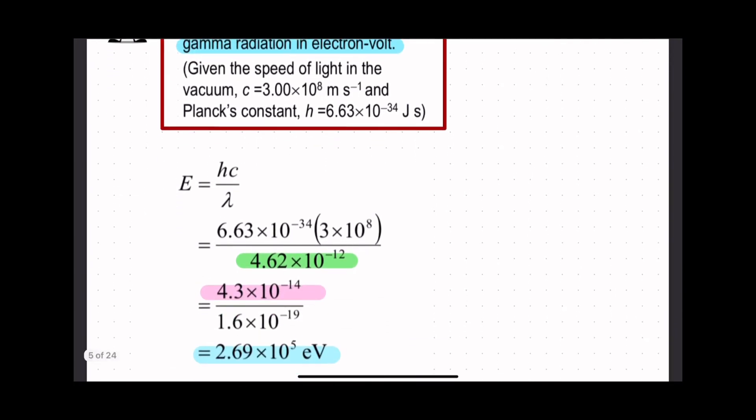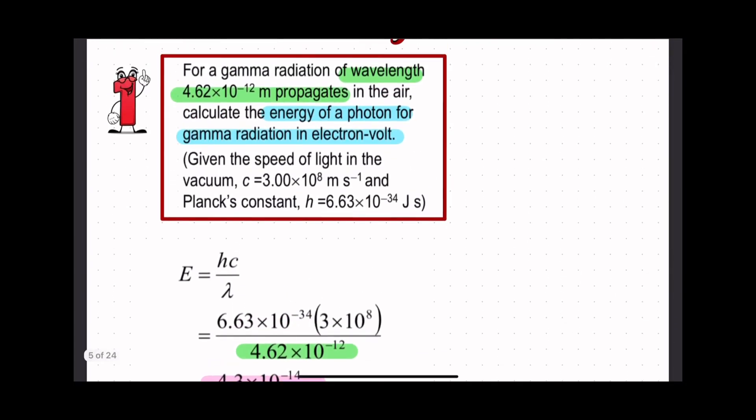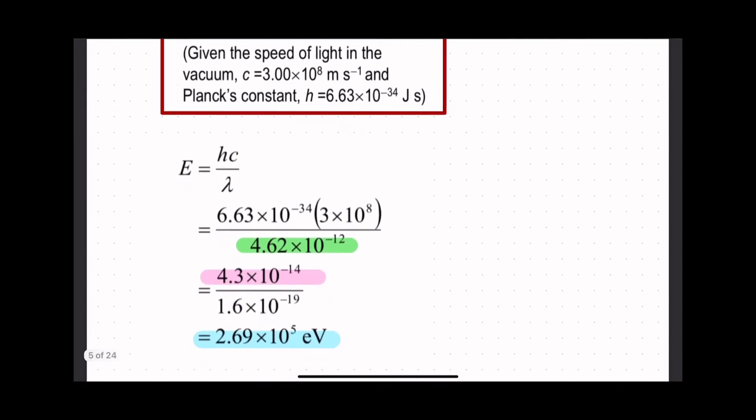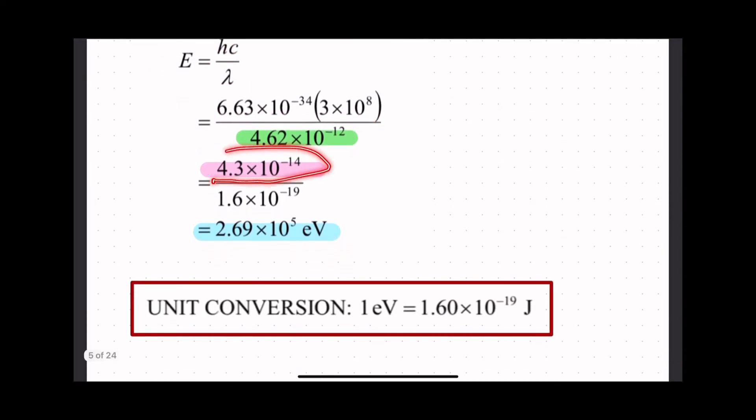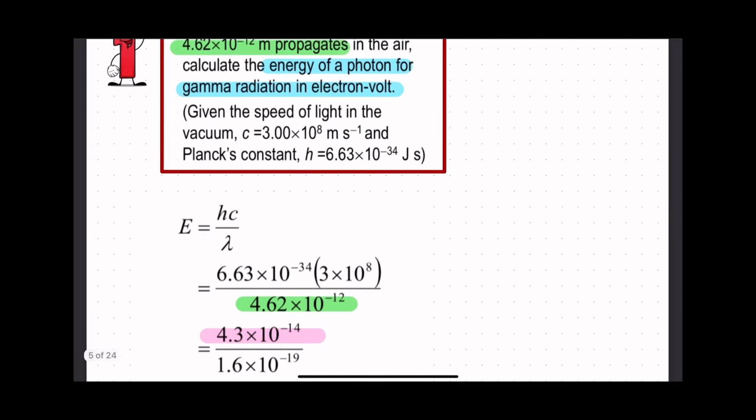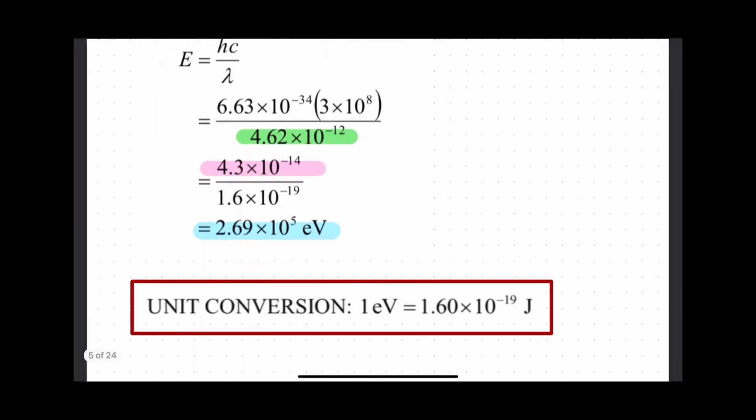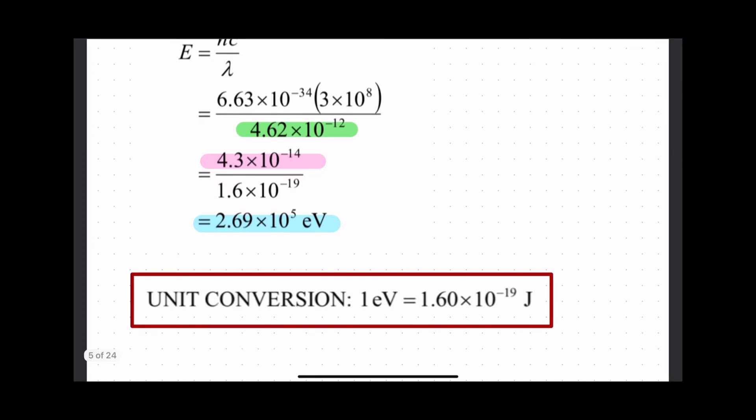E equals hc over wavelength because they give you wavelength. E equals h times c divided by lambda, where c is speed of light and h is Planck's constant divided by wavelength in meters. We get the value of energy in joules as 4.3 times 10 to the power of negative 14 joules. The question asks for electron volts, so divide by 1.6 times 10 to the power of negative 19 to get the answer in electron volts.